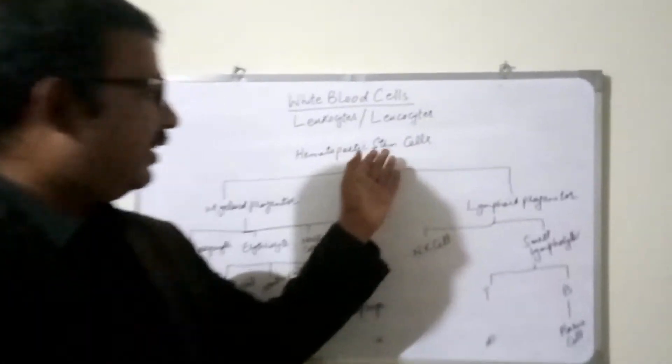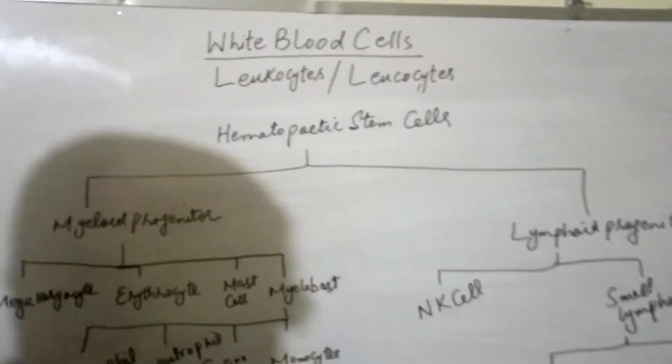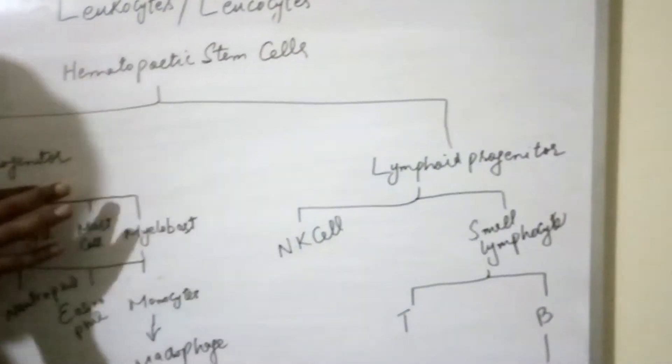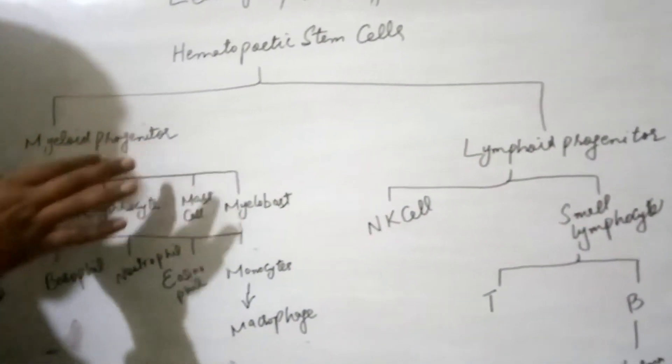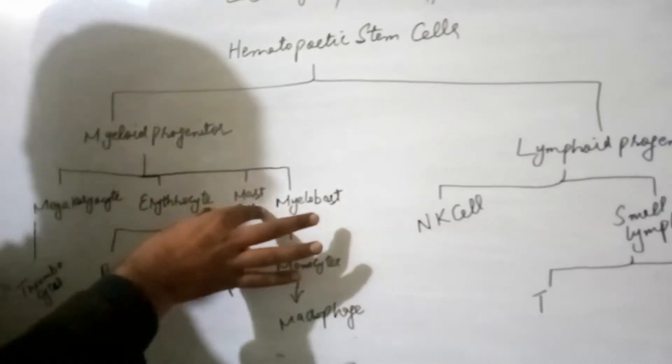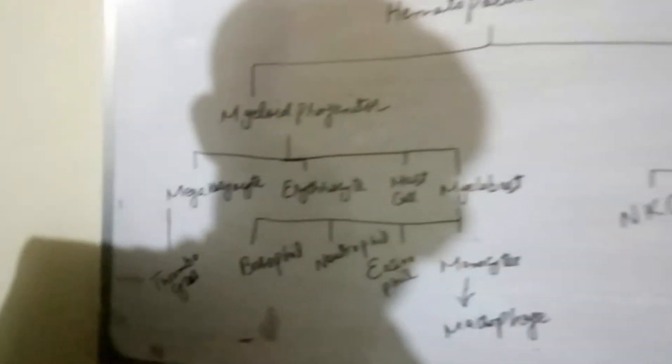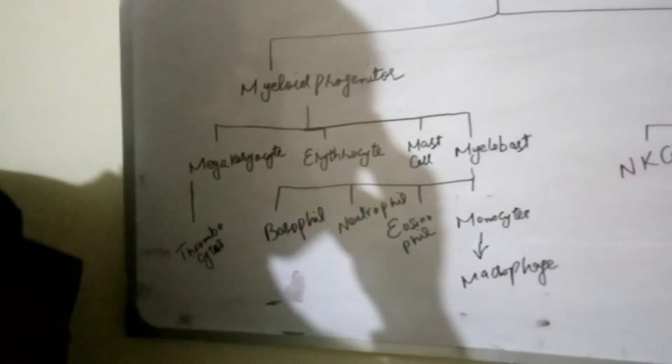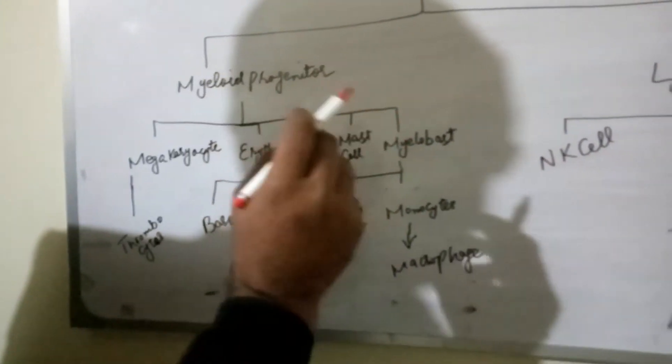Now, hematopoietic stem cells are present here and they are classified as, they have two types, myeloid progenitors and lymphoid progenitors. Myeloid progenitors are further subdivided into megakaryocytes, erythrocytes, mast cells and myeloblasts. Megakaryocytes are further differentiated into thrombocytes but as we are discussing the white blood cells, we will study myeloblasts.